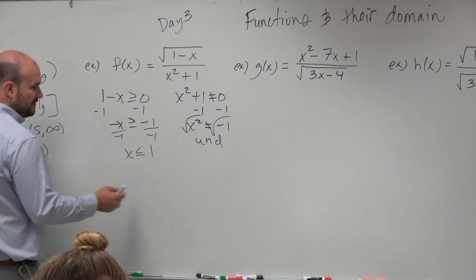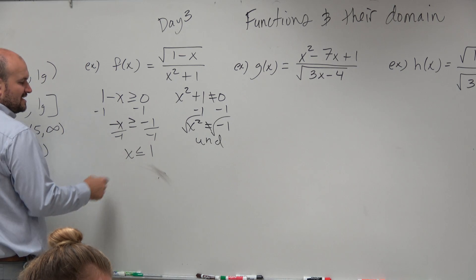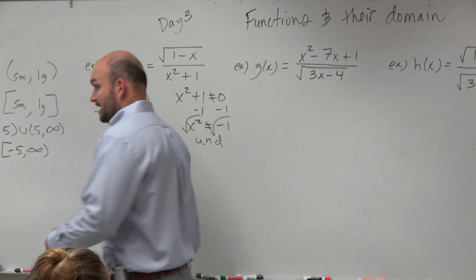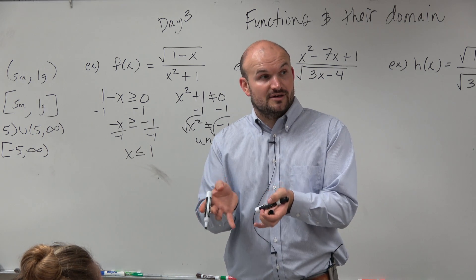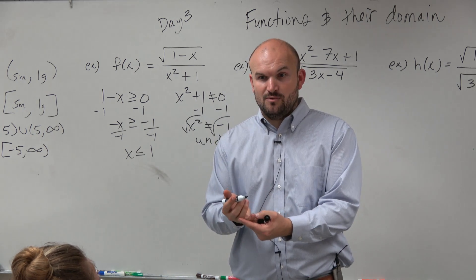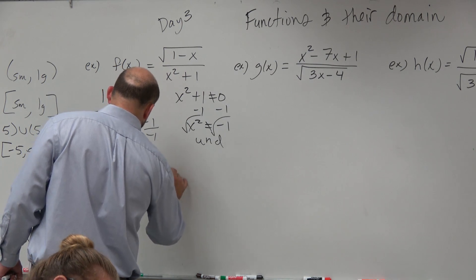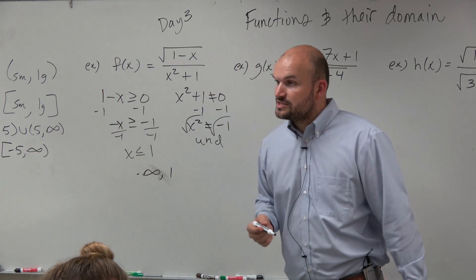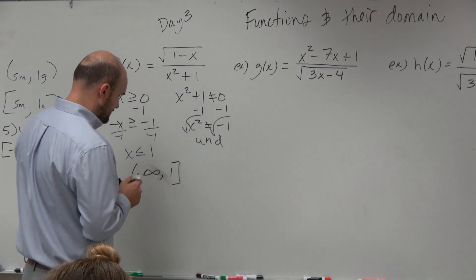Over here though, we're just left with x has to be less than or equal to 1. So remember we always do the smallest term first. Less than or equal to 1, so what's the smallest number that's less than 1? Negative infinity. And then we're going to go all the way to 1. 1 is less than or equal to, so that's going to be included.